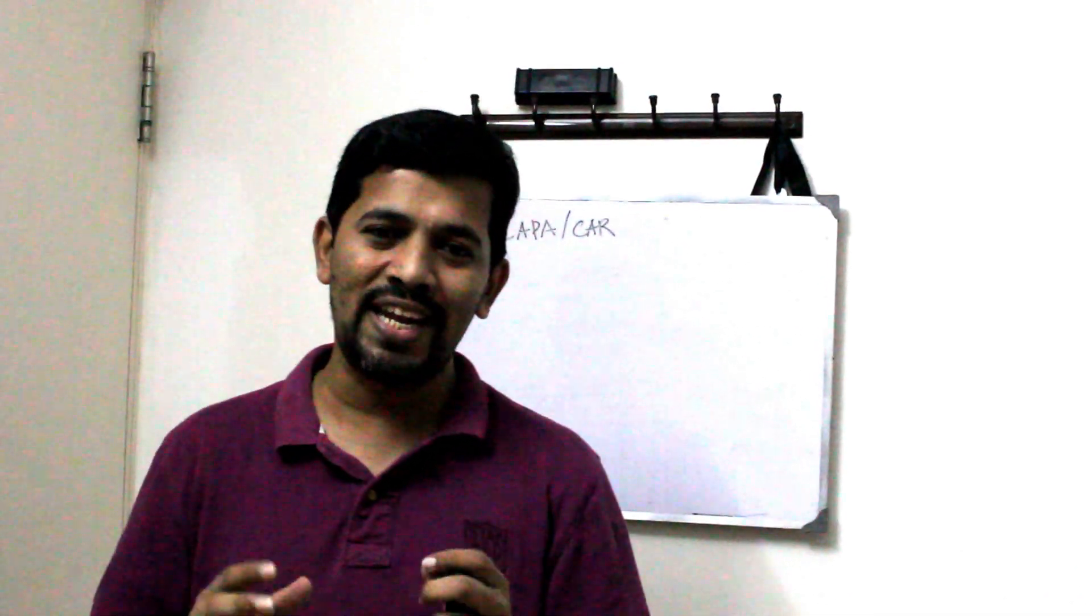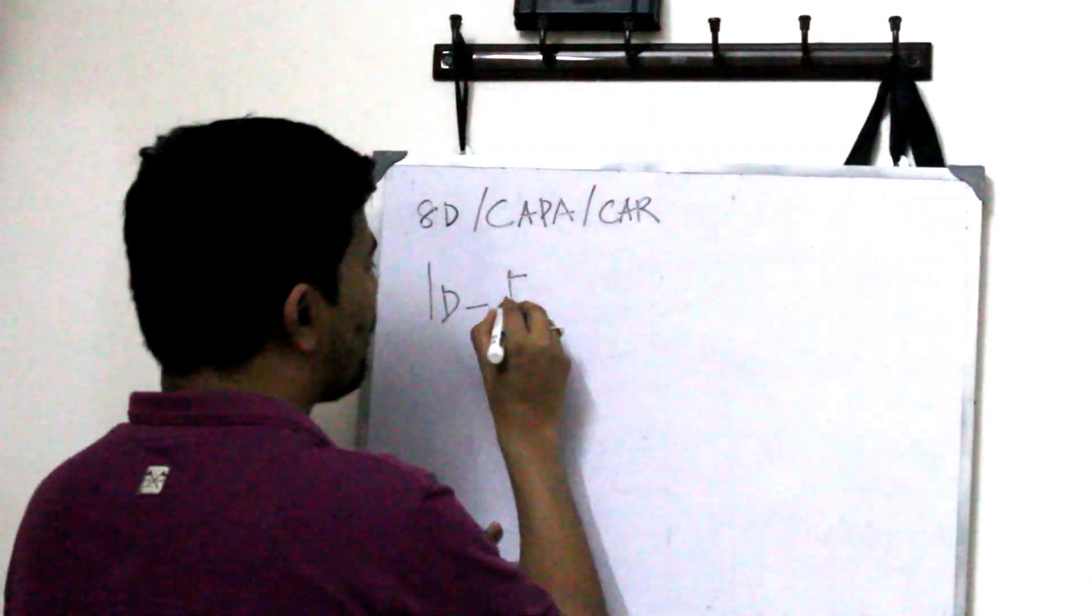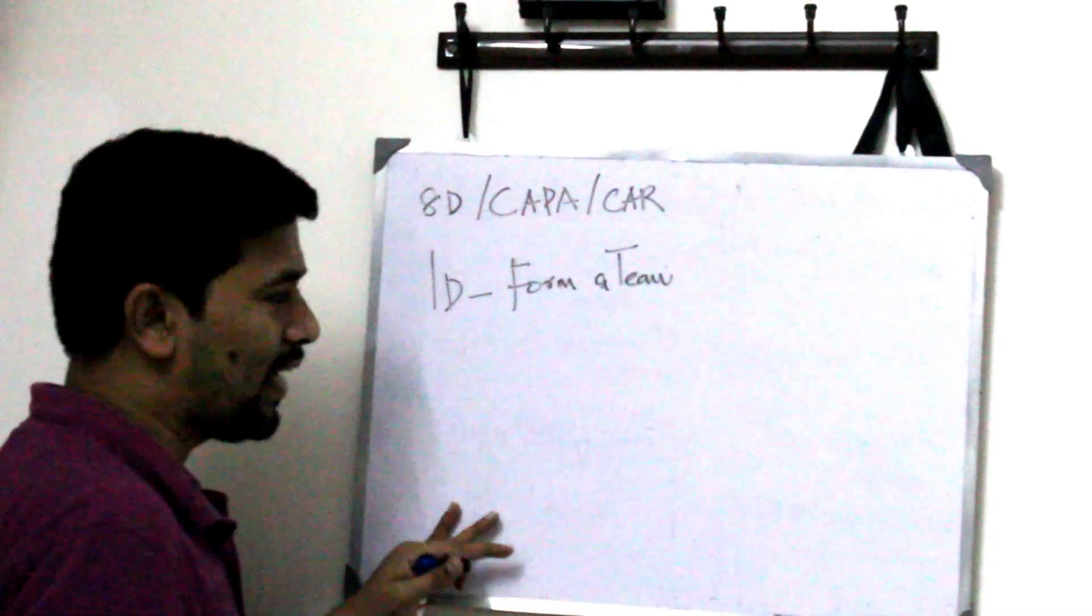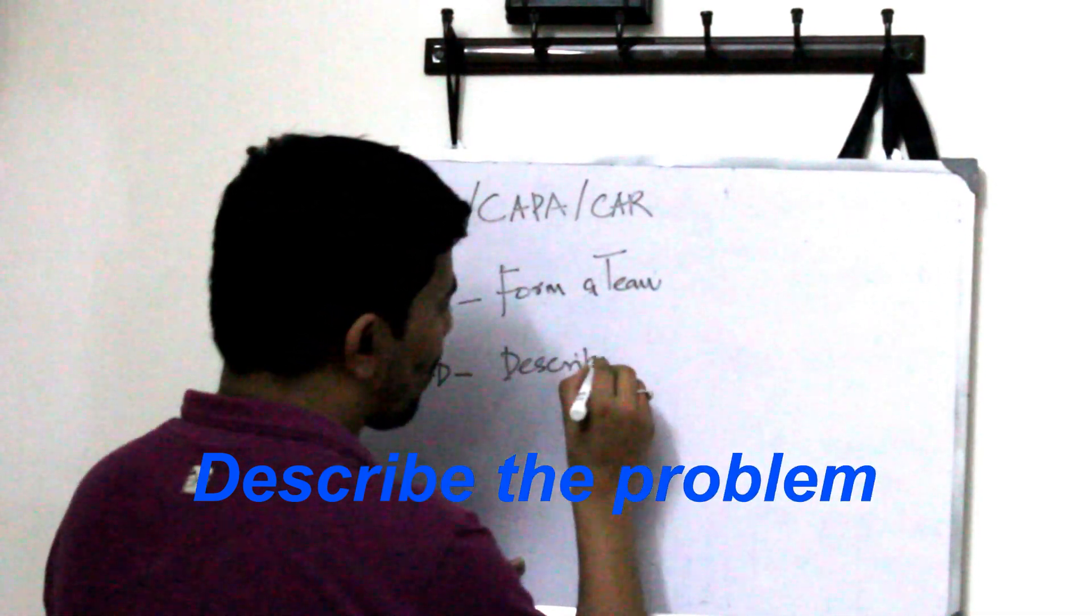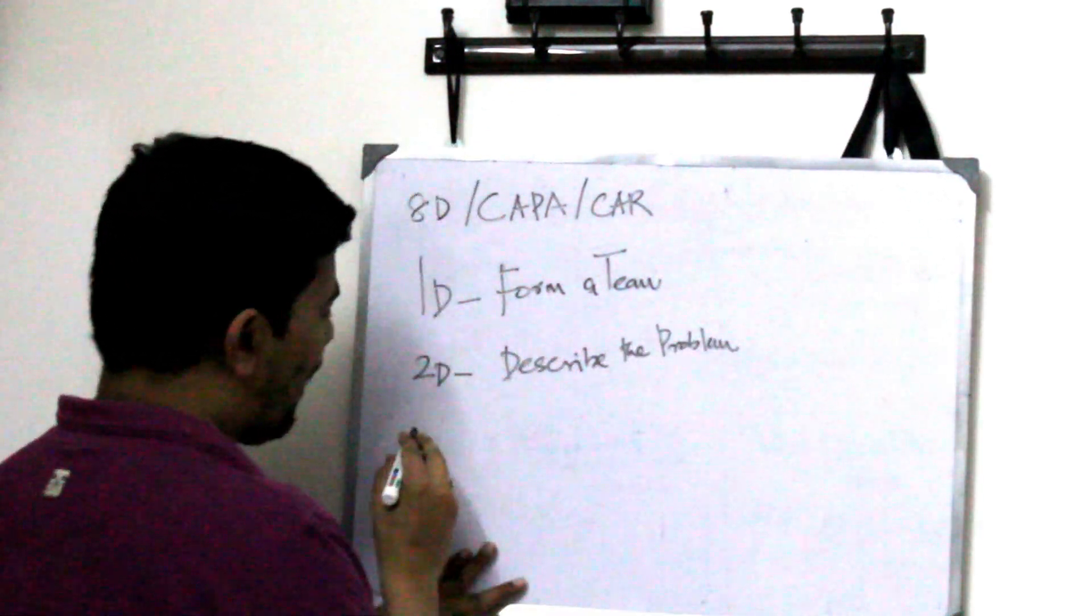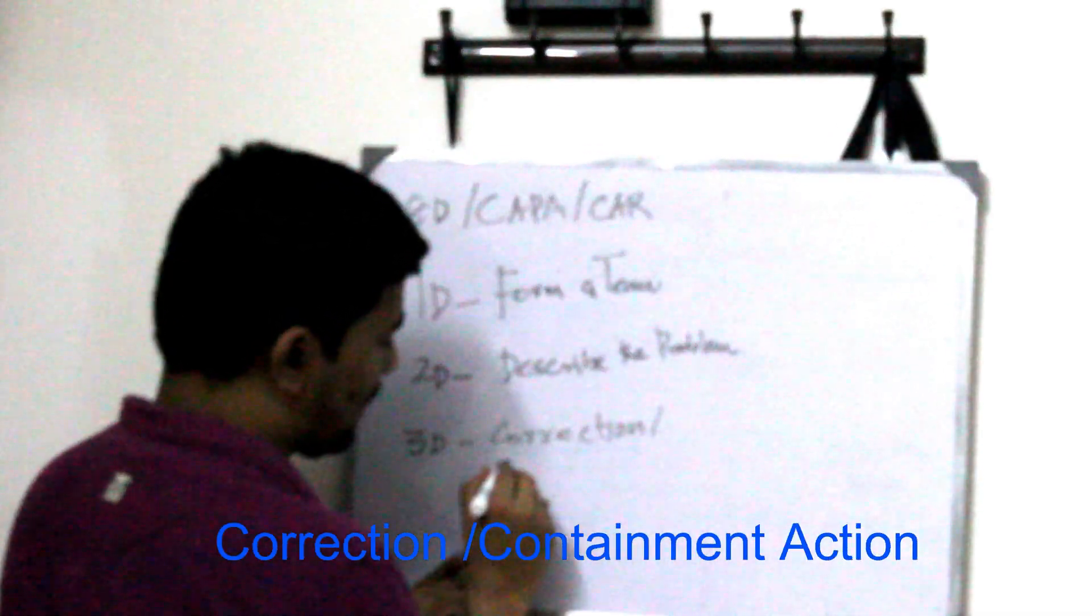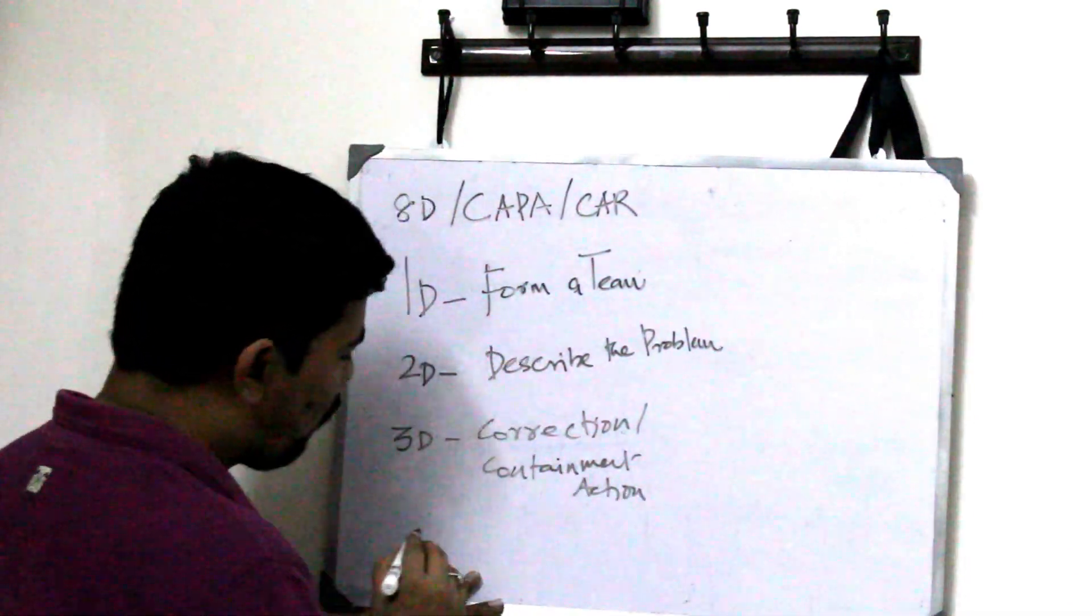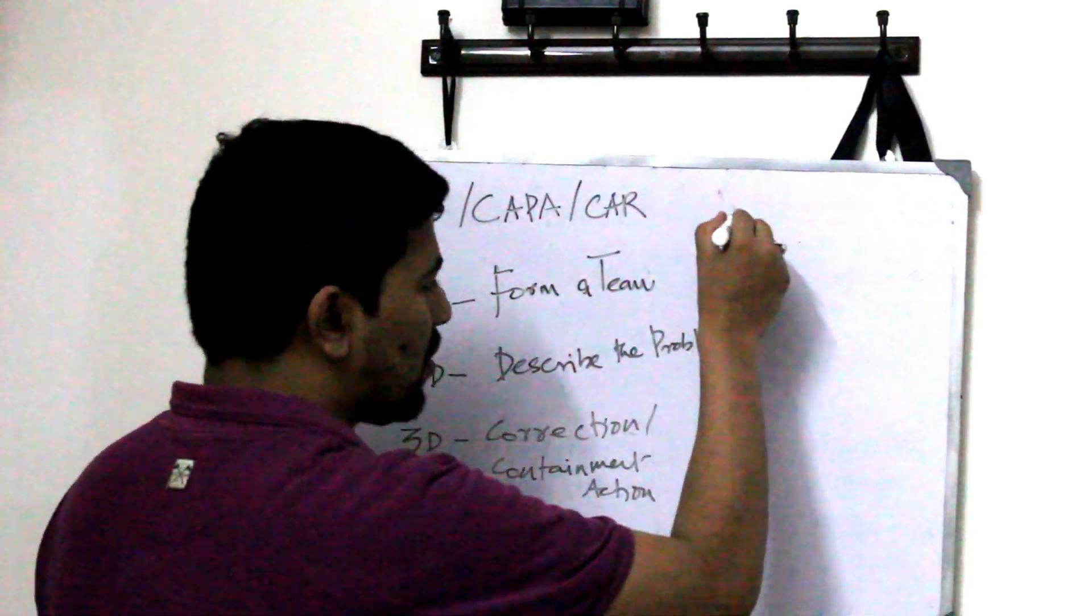Let's see what those 8D is all about. So the first D is called form a team. Another D you have, second D is called describe the problem. And then third D you have correction or containment action. And then fourth D you have root cause analysis. So this is all about 4D.